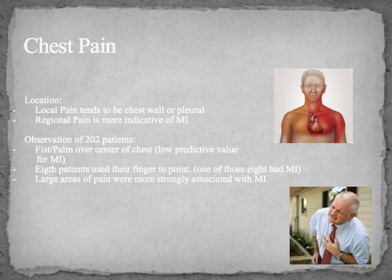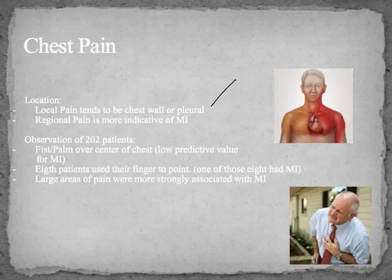Your typical presentation or chief complaint can either have chest pain or not chest pain. If a person comes in complaining about chest pain, you're going to want to have myocardial infarction on your list automatically. The location can rule it down — if the location tends to be local, it's probably chest wall or pleural in nature, or it could be pulmonary. However, this can't rule out an MI. If it's regional pain, it tends to rule up a myocardial infarction.